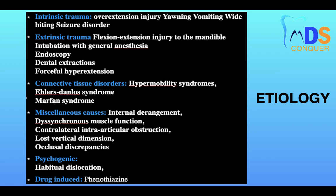Basically, the tissues which are elastic — like the capsule, ligament, and the structures holding the disc in position, such as the lateral pterygoid anteriorly and the retrodiscal lamina posteriorly — their elasticity has been lost and the tissue has become lax, allowing the movement of the condyle out of the fossa.